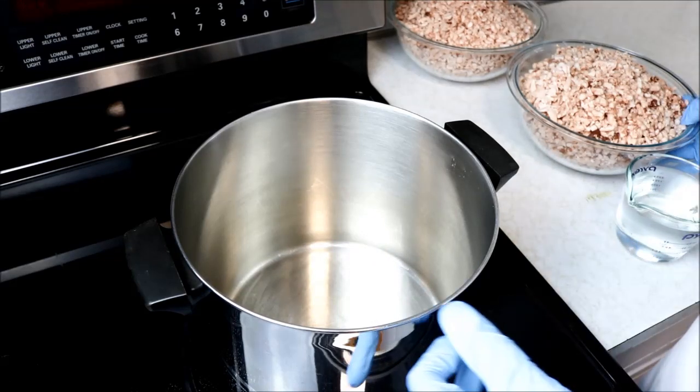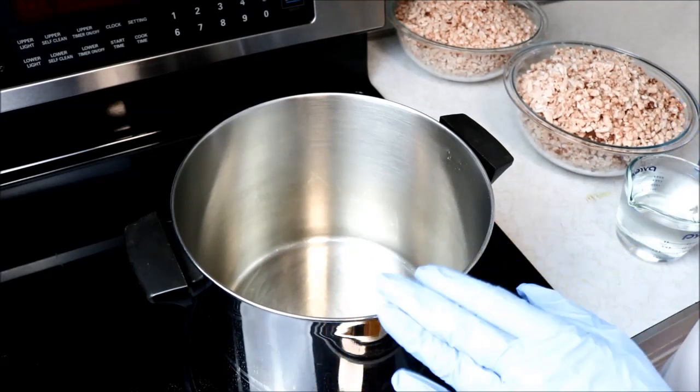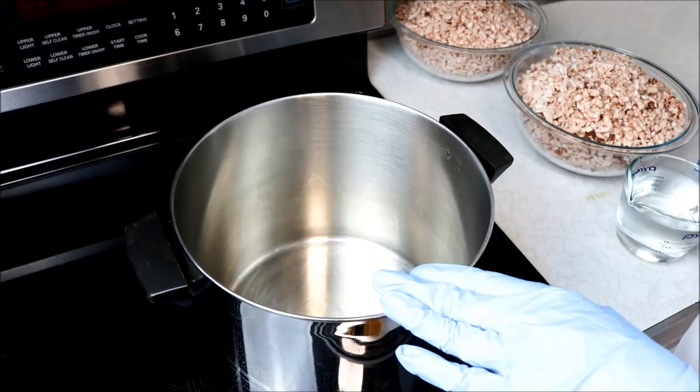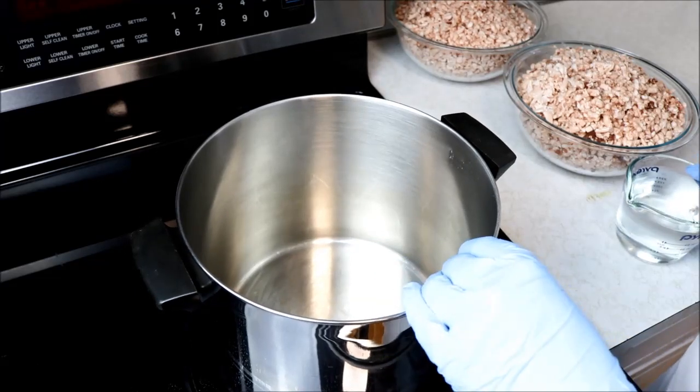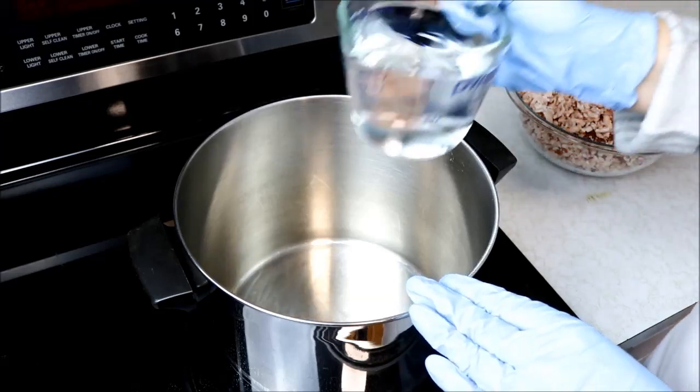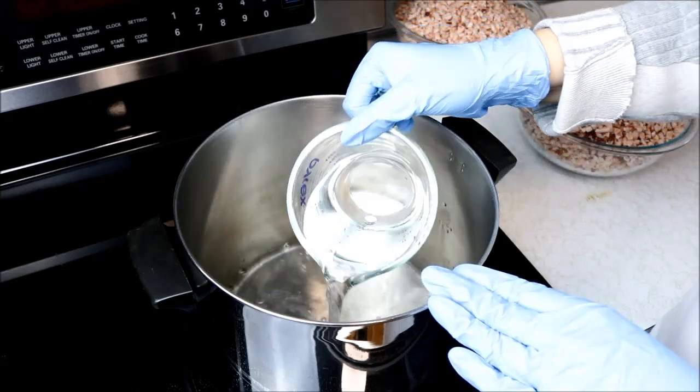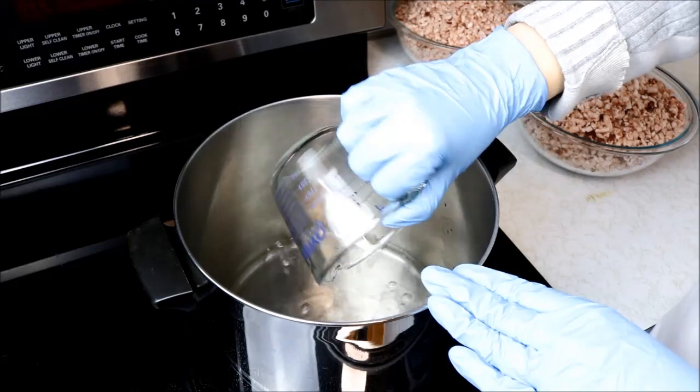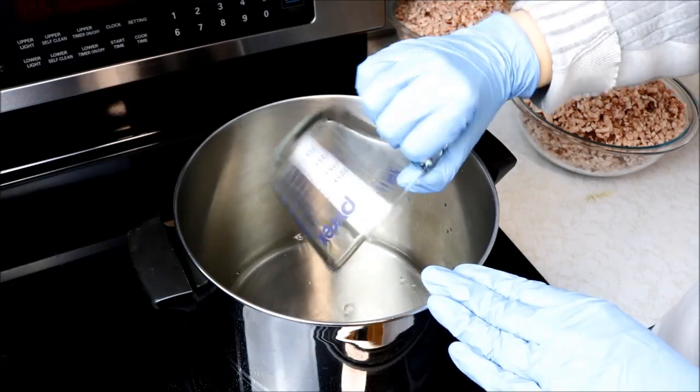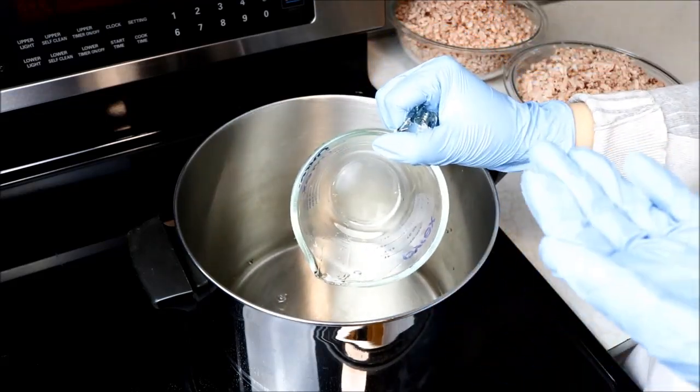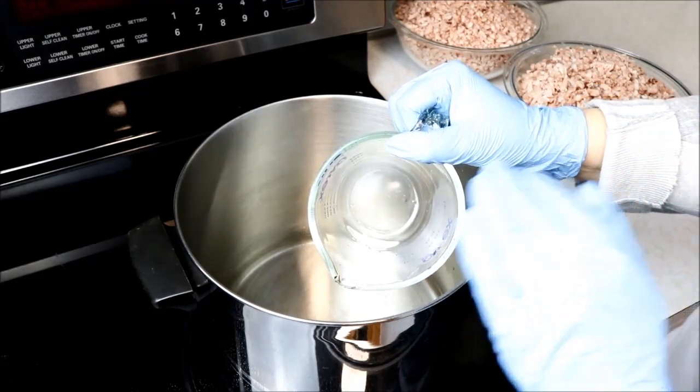Now that I have all my fat ground up I am going to melt it down in my 8 quart stock pot on a low heat setting and to keep it from burning what I'm going to do is I'm going to add about one and a half cups of warm water and then I'm just going to put the fat in there with it. It'll float to the top and that way it's not on the direct heat of the burner.